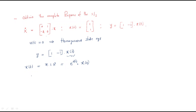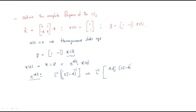First we need to find e^(At). We can write e^(At) as the Laplace inverse of (sI - A)⁻¹. So we find the Laplace inverse of the adjugate of (sI - A) divided by the determinant of (sI - A).